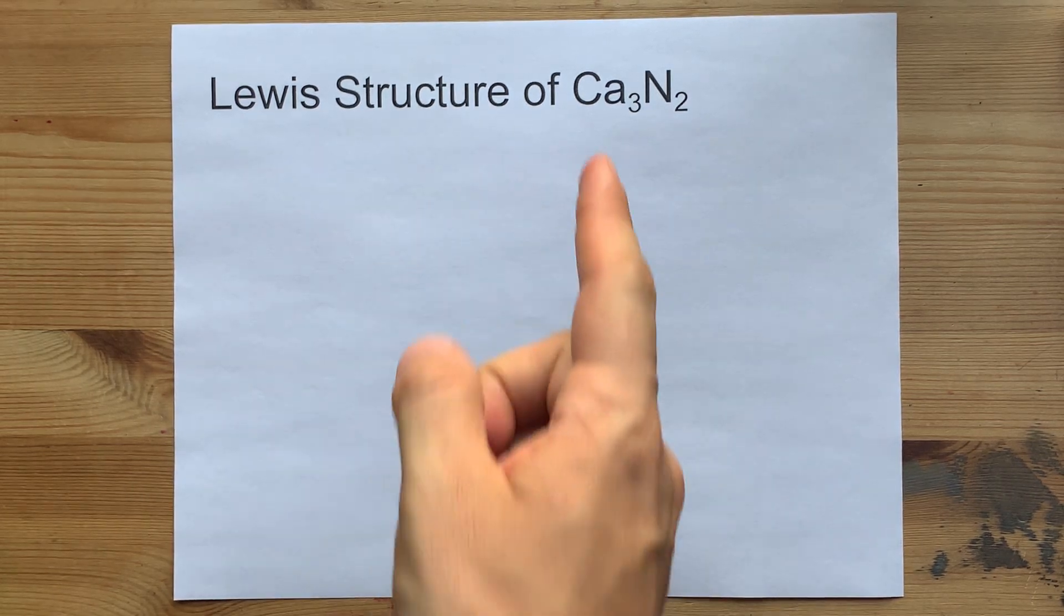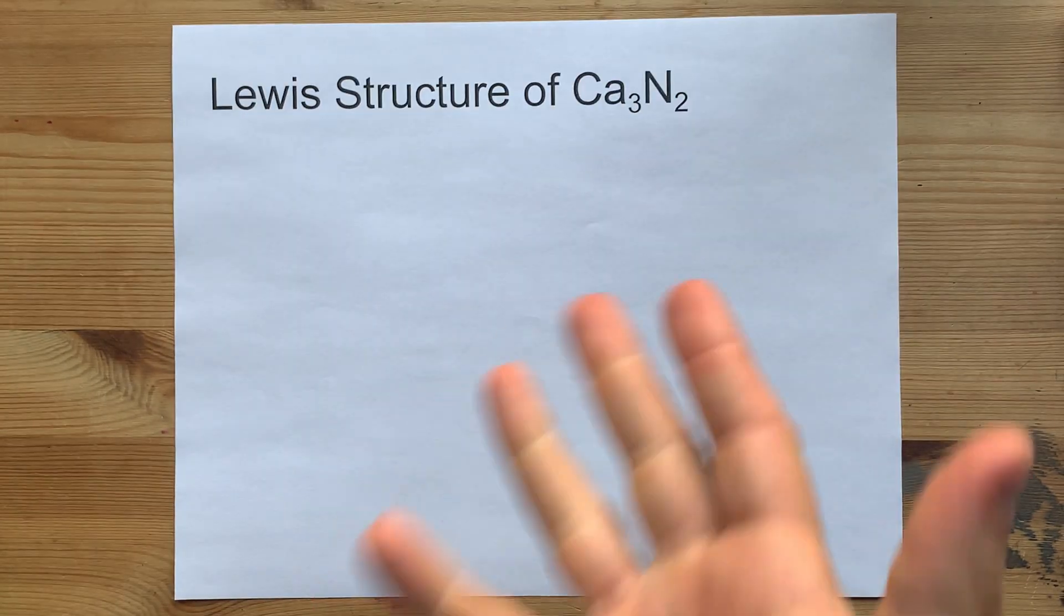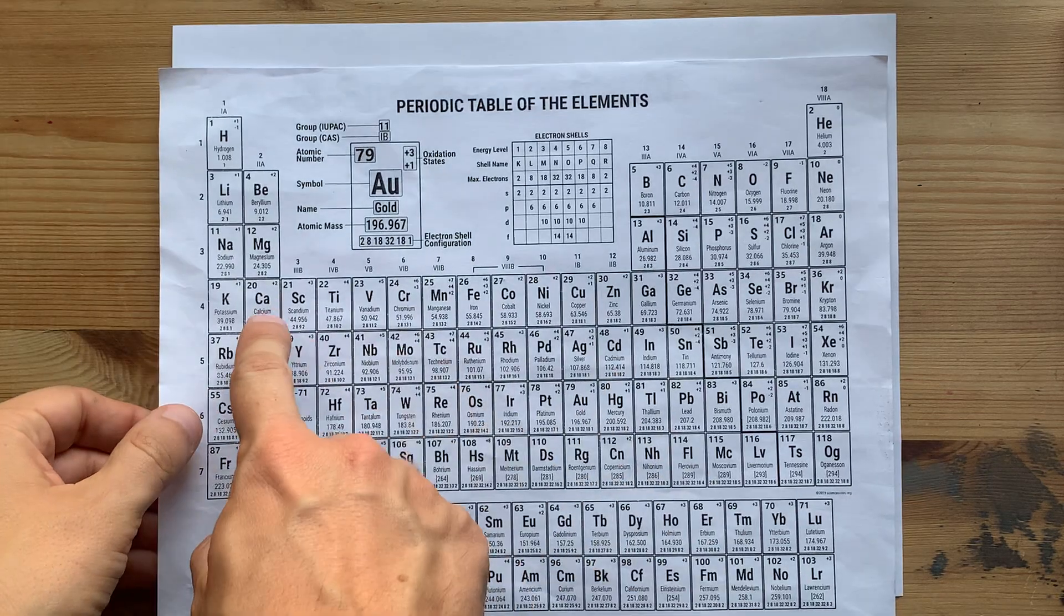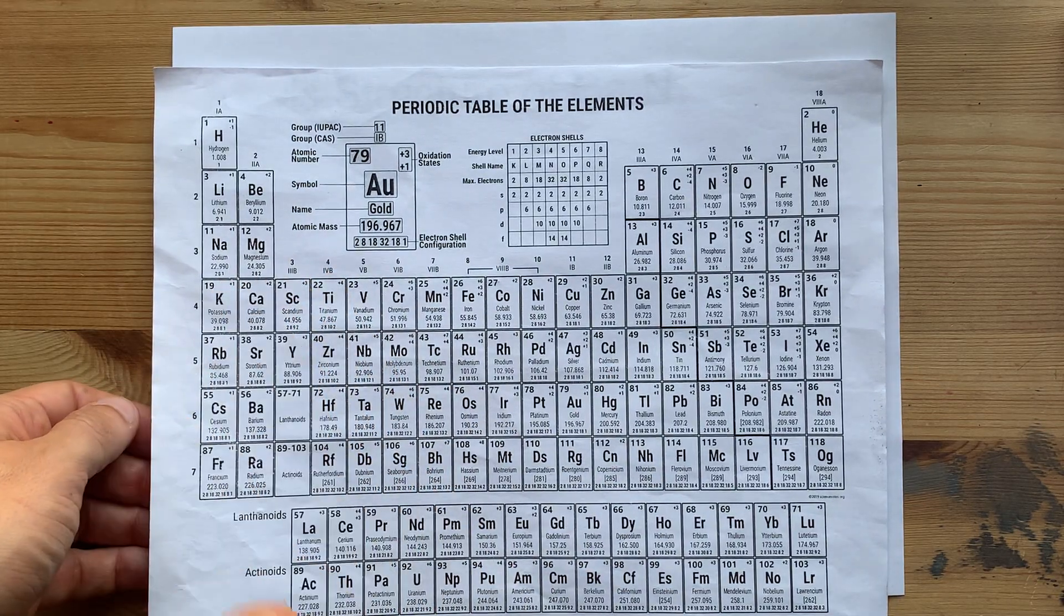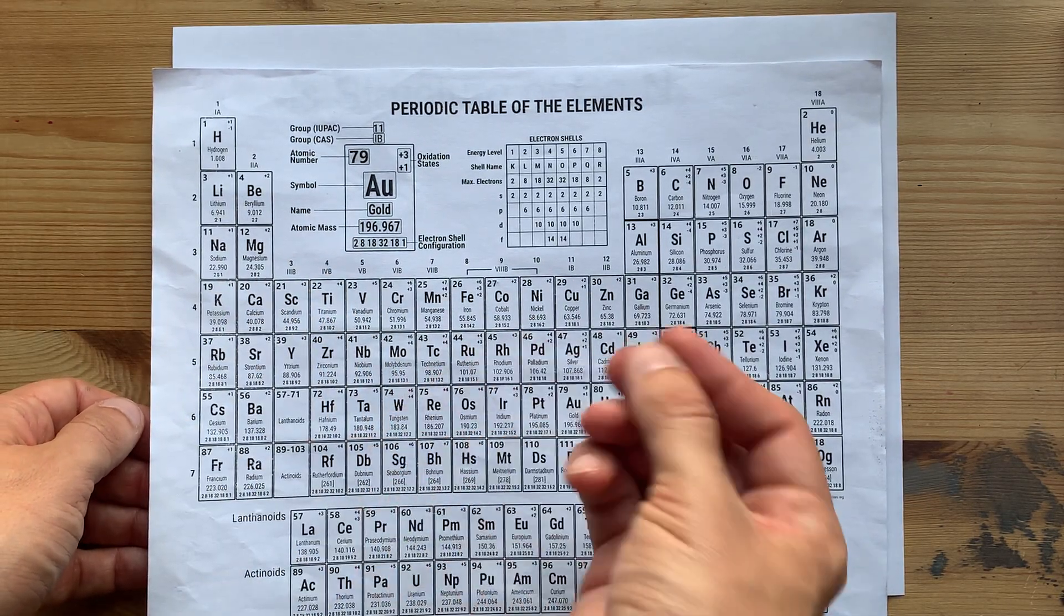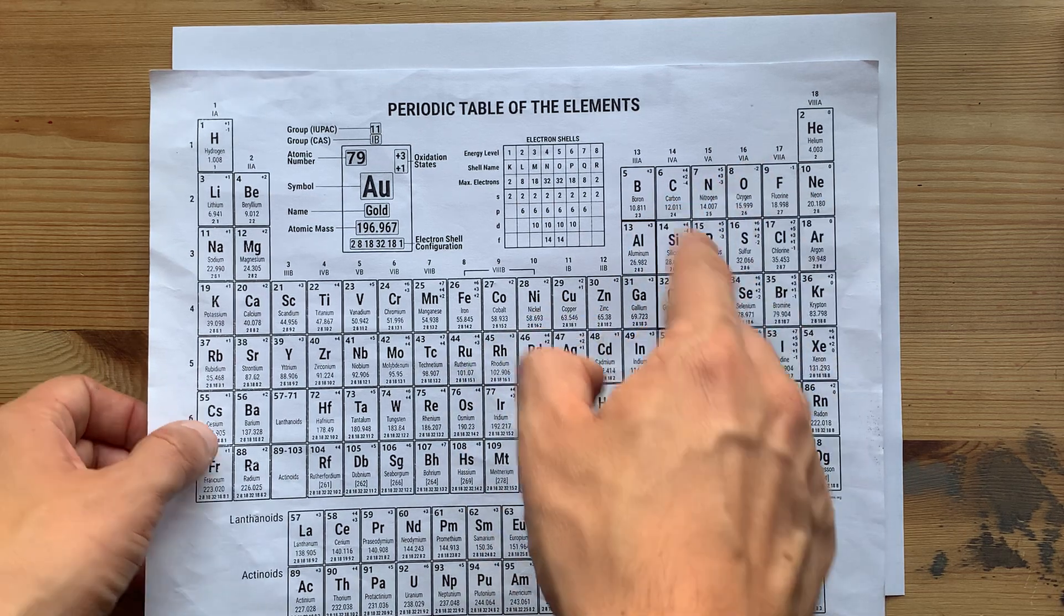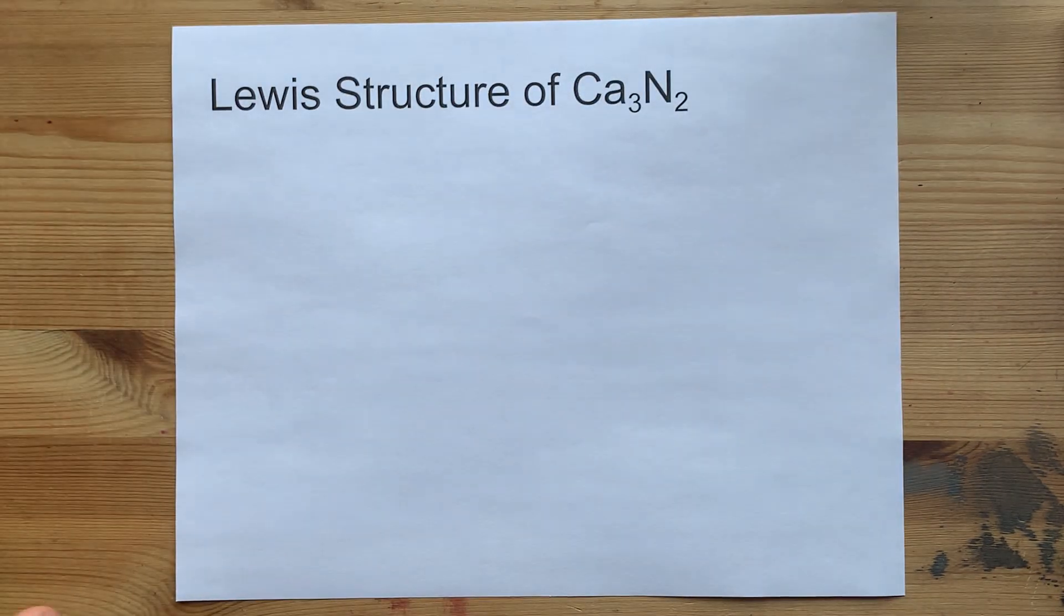The Lewis structure of Ca3N2, calcium nitride, has calcium, a metal from the left side of the table, bonded to nitrogen, a non-metal from the right-hand side.